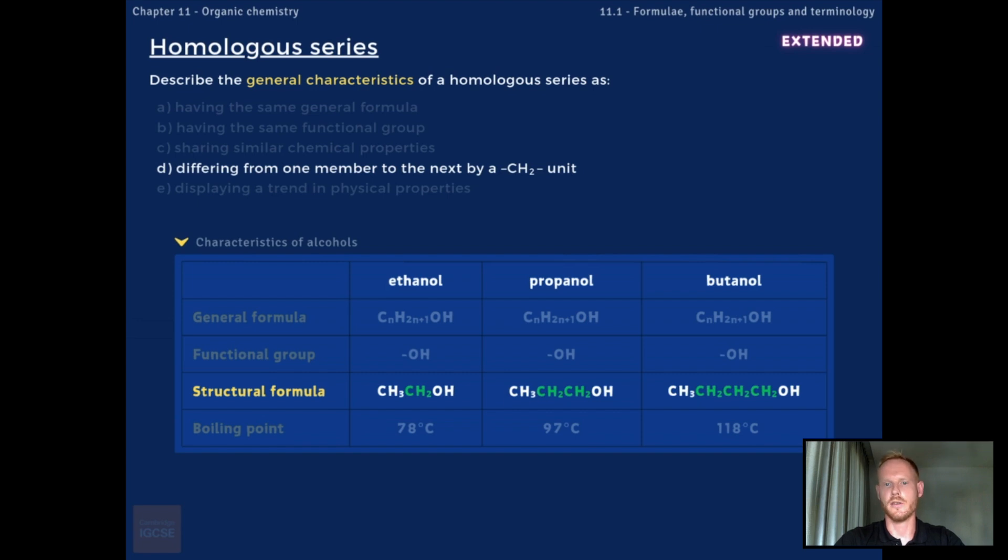For example, the alcohols ethanol, propanol, and butanol have one, two, and three CH2 units respectively. Finally, homologous series display trends in physical properties, such as melting point and boiling point.